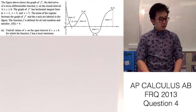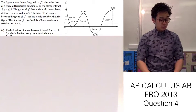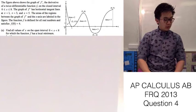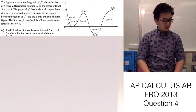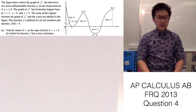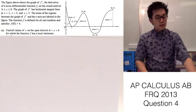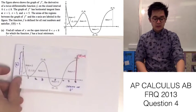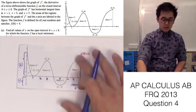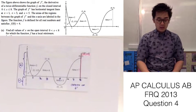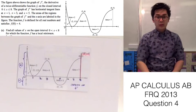Today we're going to be answering an FRQ from 2013, question number 4. In this FRQ we are given the graph of f prime, and also the horizontal tangents of the graph at x equals 1, x equals 3, and x equals 5. Also, f of 8 is defined as f(8) = 4. By looking at the graph we can see that the areas of the curve between the x-axis are also defined. We need to remember that the graph we are looking at is the graph of the derivative function.